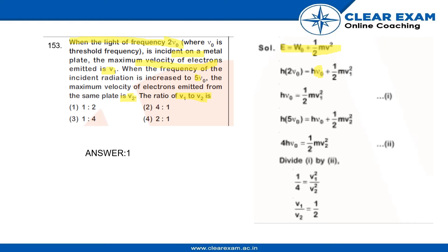So for initial frequency, h into 2μ0 equals h μ0 plus half mv1 square. So initially the velocity was V1. So we are getting h μ0 equals half mv1 square as the first equation.